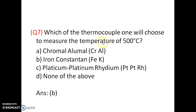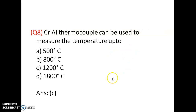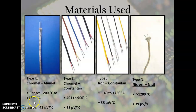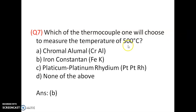Question 7: Which thermocouple would one choose to measure a temperature of 500°C? To measure 500°C, Iron-Constantan (type E, range ~900°C) is chosen because its range covers 500°C. Answer is B.